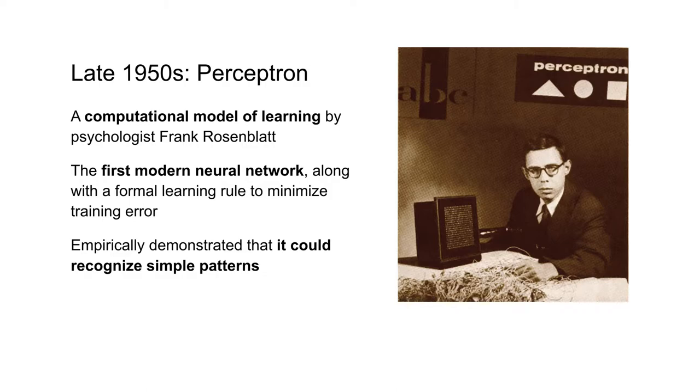The modern neural network really arose with the work of Frank Rosenblatt, who was another psychologist and who in the 1950s invented what he called the perceptron. The perceptron was a computational model of learning and it was already a supervised architecture, so it could learn to predict patterns that were given to it. And Frank Rosenblatt in the 1950s demonstrated that he could train the perceptron to recognize simple patterns like letters.